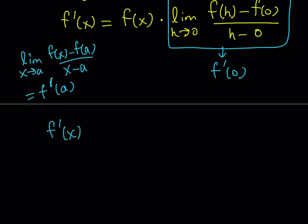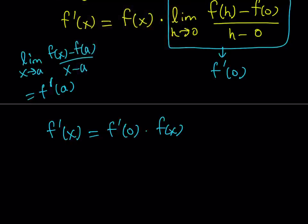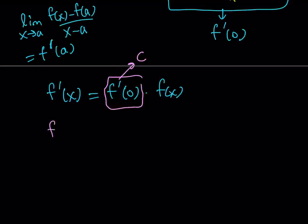So we get f prime of x equals f of x times f prime at 0. Since f prime at 0 is a constant — the derivative is a function, and since f is differentiable this is a constant value — let's replace f prime at 0 with c. The equation becomes f prime of x equals c times f of x. This is great because we found that the derivative of f is actually a multiple of f. At this point we can turn this into a differential equation and solve by integration, then determine the constant c if possible.